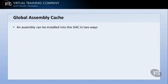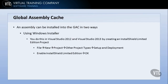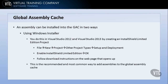An assembly can be installed into the Global Assembly Cache in two main ways. The first is using Windows Installer. You do this in Visual Studio 2012 and 2013 by creating an InstallShield Limited Edition project. This is not installed by default with Visual Studio, but if you go to File > New Project > Other Project Types > Setup and Development, you'll see a choice that says Enable InstallShield Limited Edition. When you click that, it'll open your browser and take you to a web page with download information. Just follow the instructions to install it and build a Windows Installer project. This is the recommended and most common way to add assemblies to the Global Assembly Cache.